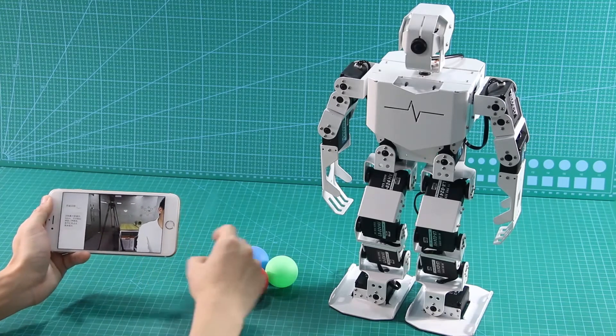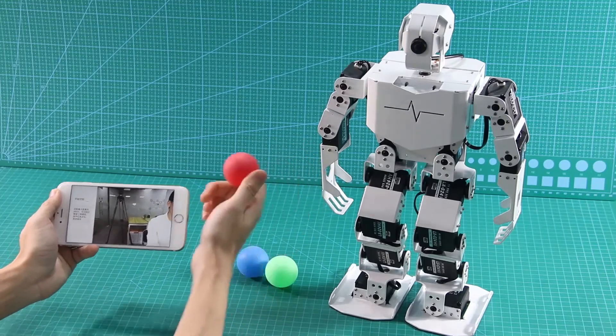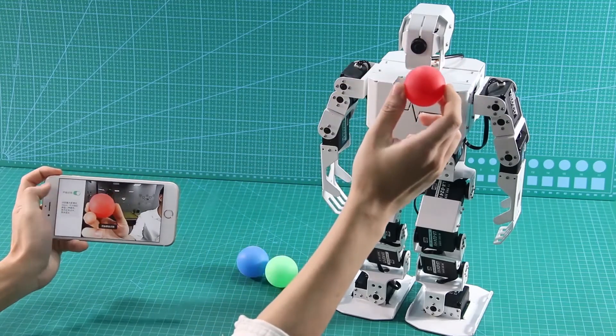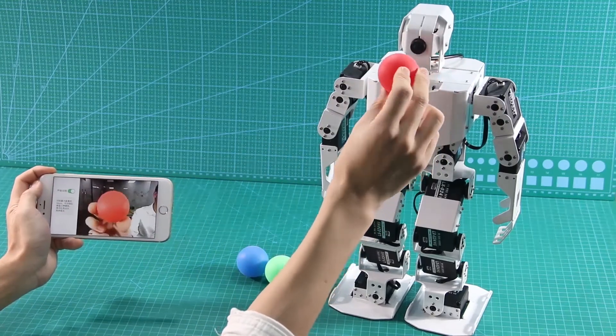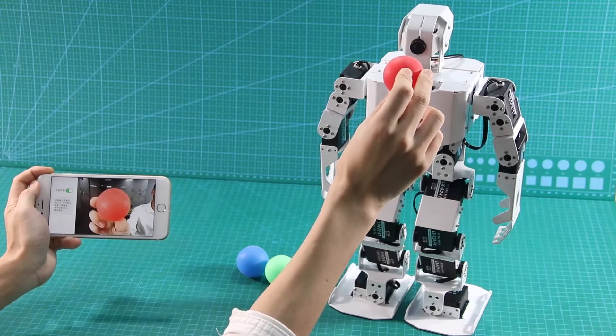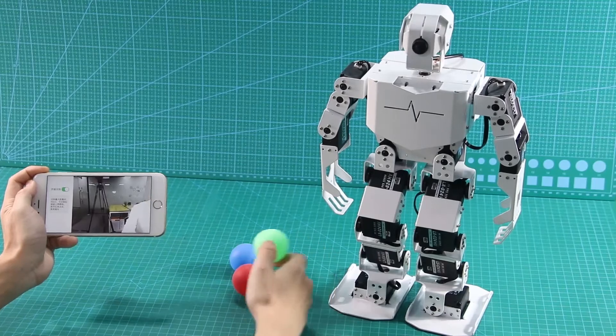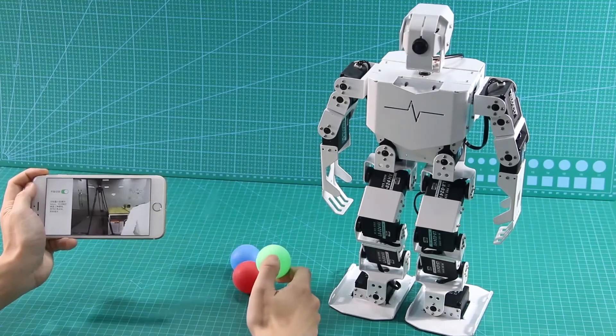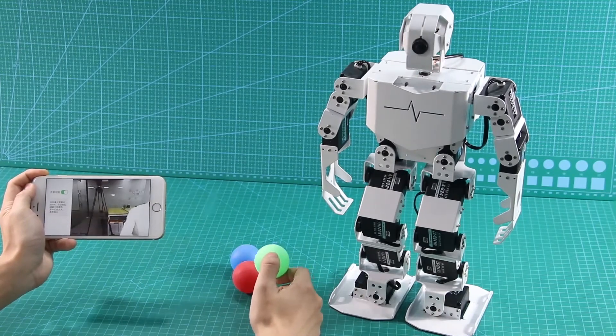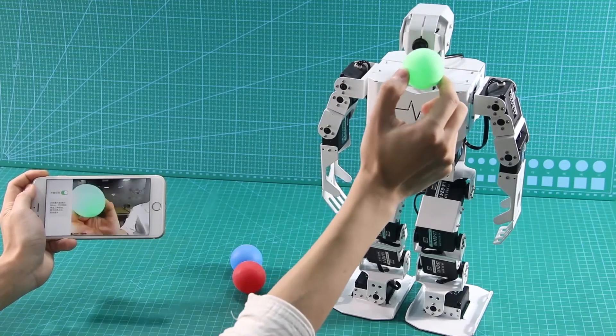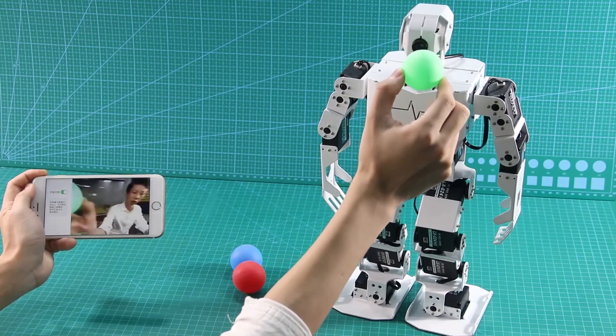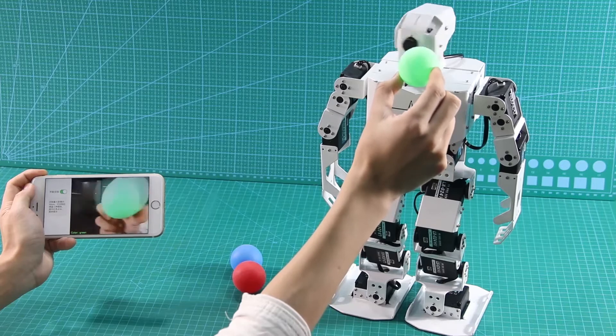OK, let's look at the performance. TonyPi is equipped with a wide-angle camera. Currently, the background has different colors so that TonyPi can also recognize the colors.